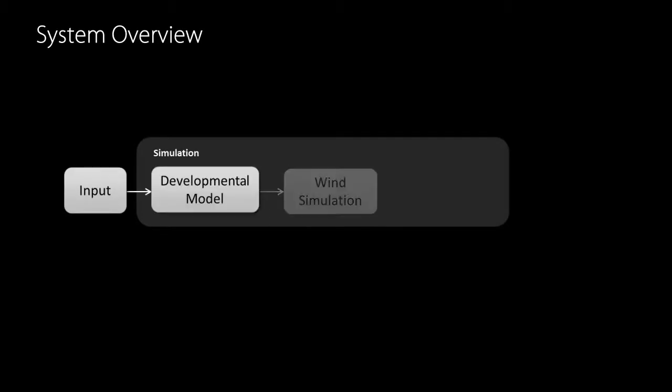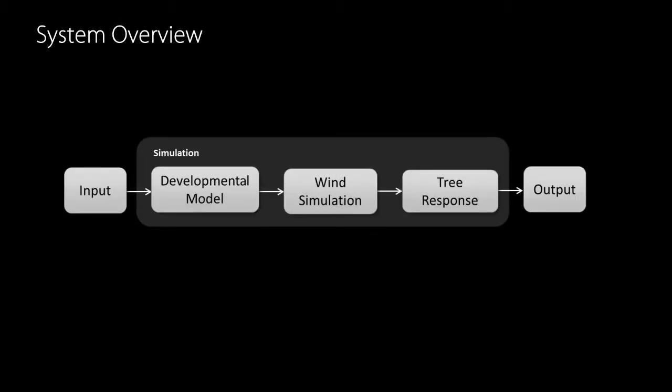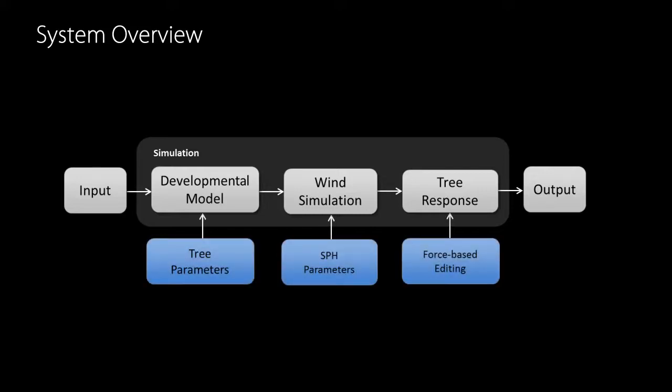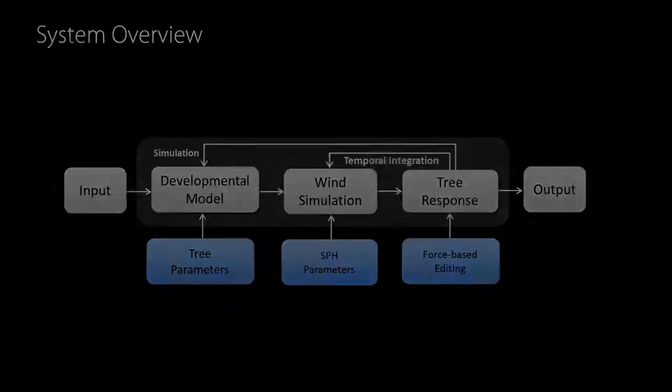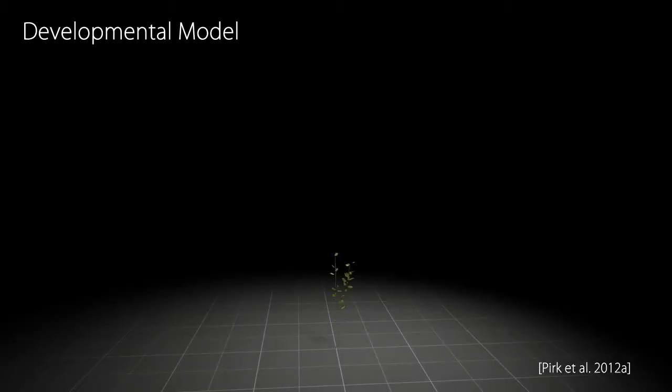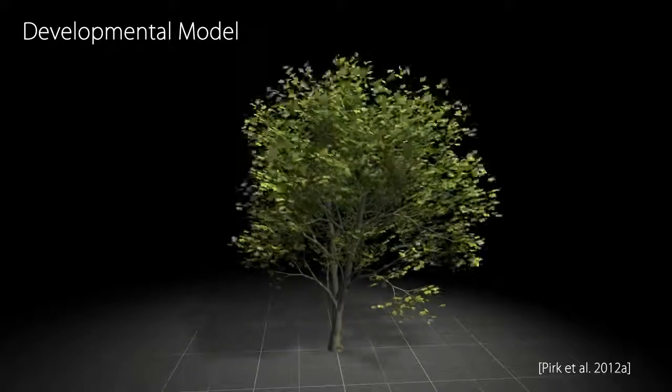Input to our method are the parameters of the developmental model and the scene definition. Wind is simulated using smoothed particle hydrodynamics while the tree environmental response is calculated from temporal integration of tree stress. Our developmental model provides a wide variety of trees and allows for animations of growth in real time.